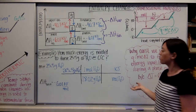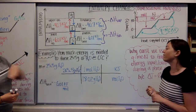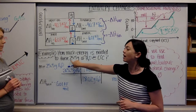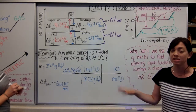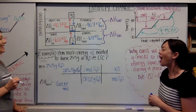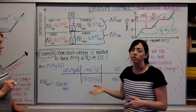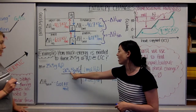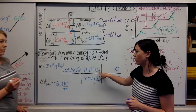We just use dimensional analysis. Here is an example: if we have 25.5 grams of water and we want to freeze it, how much energy needs to be released? First we have to convert to moles: 25.5 grams of water divided by 18.02 grams of water per one mole of water — that's our molar mass of water.